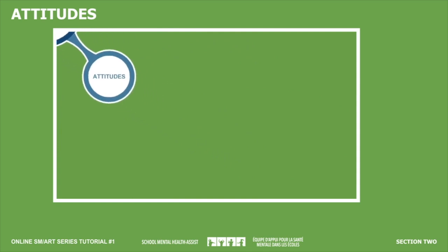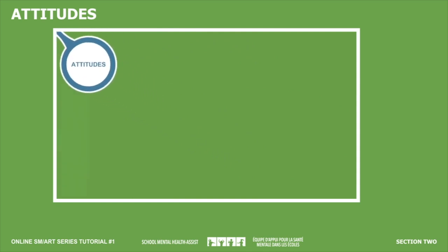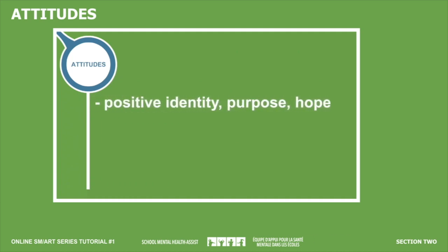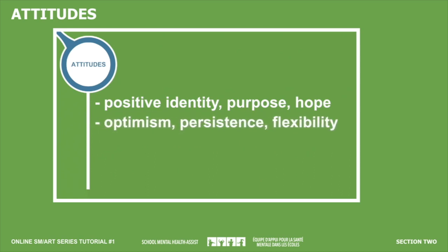An attitude is a way of thinking, feeling, or behaving that reflects a state of mind or disposition. The Positive Psychology Movement, led by Seligman and colleagues, offers one way to inspire positive attitudes in children and youth — they suggest techniques for building optimism, persistence, and flexibility. There are also approaches designed to build compassion, like Roots of Empathy; belonging, like inclusion-oriented programming; or positive identity, purpose, and hope, like Indigenous land-based teachings.